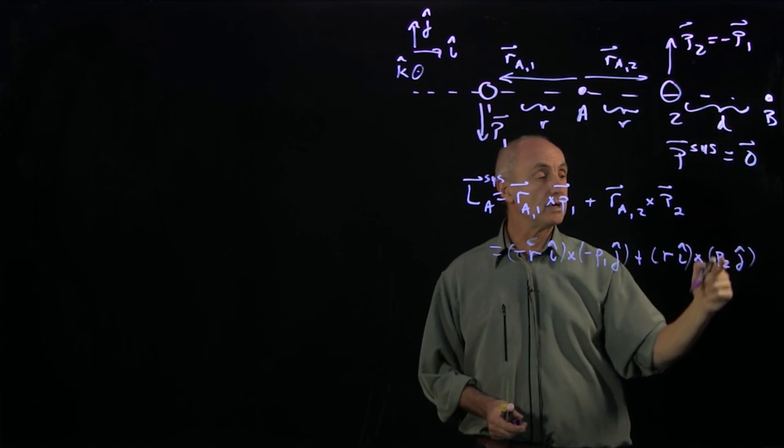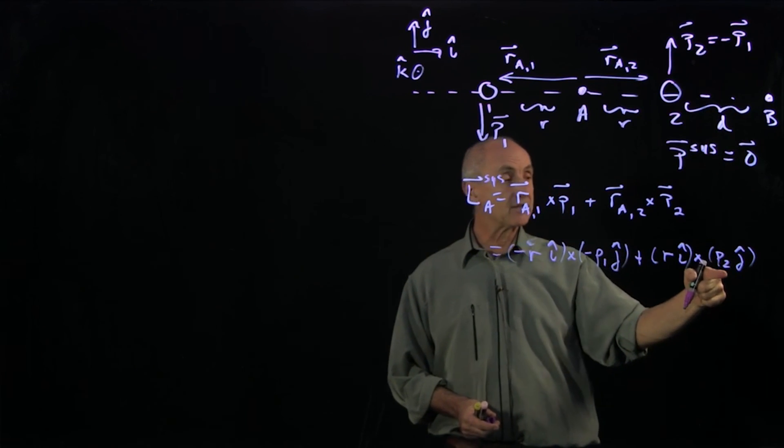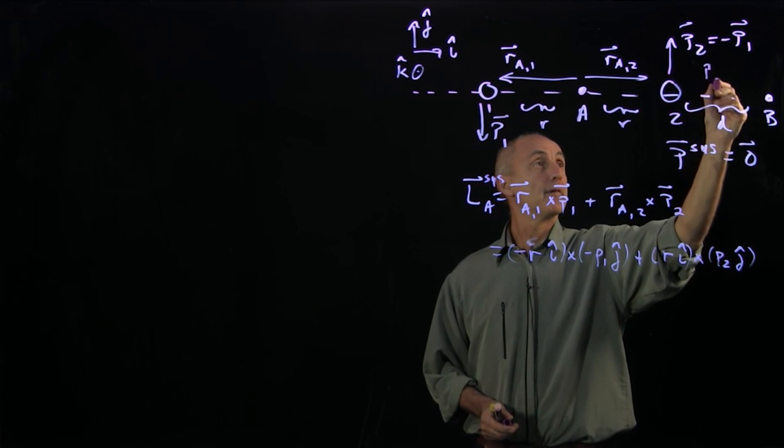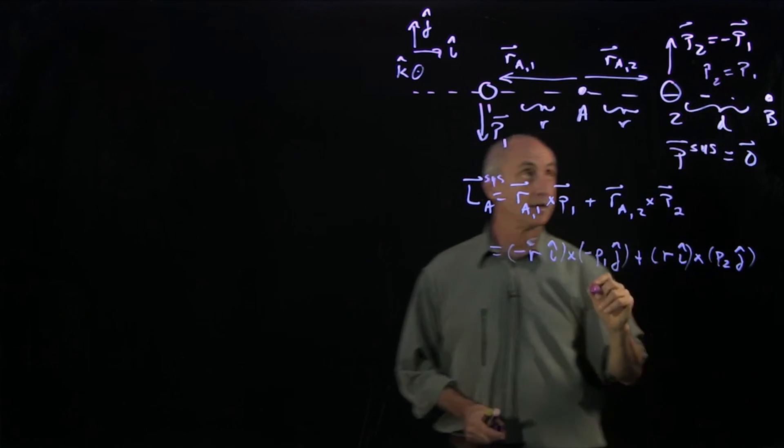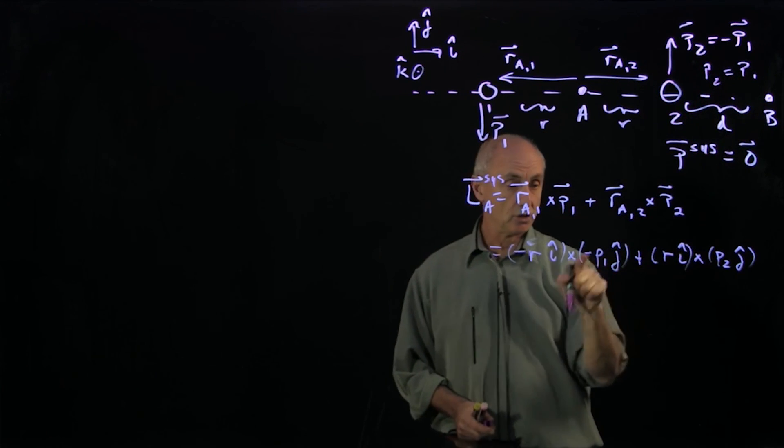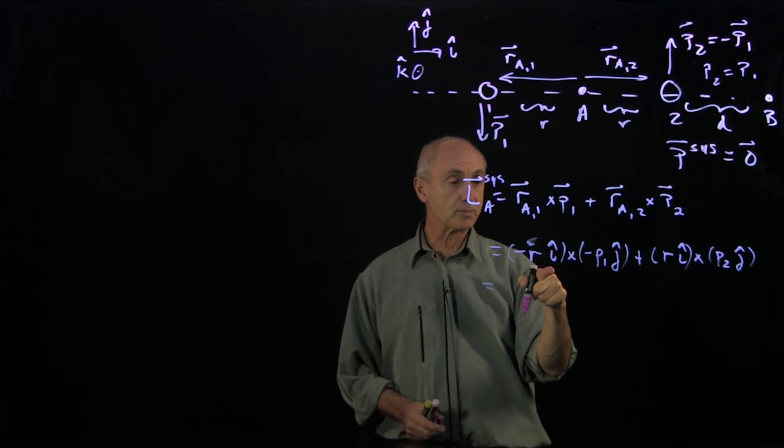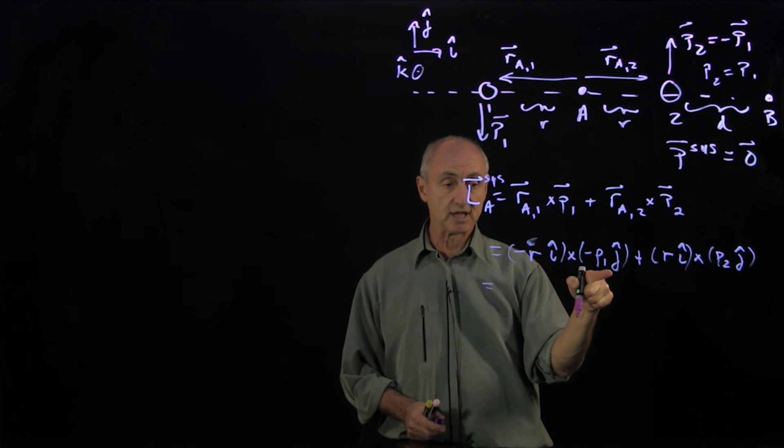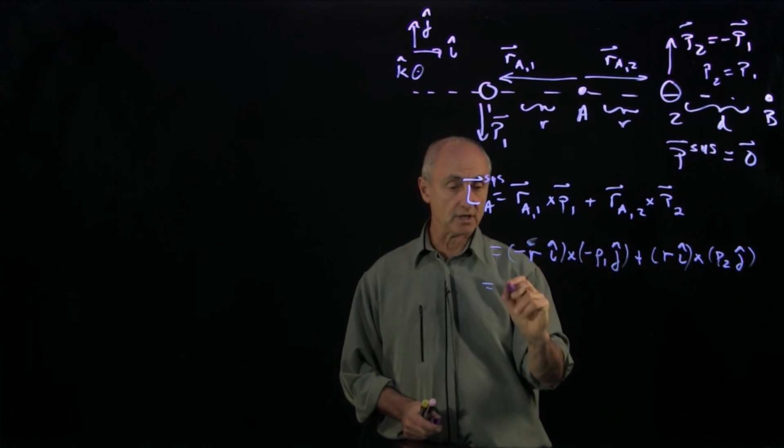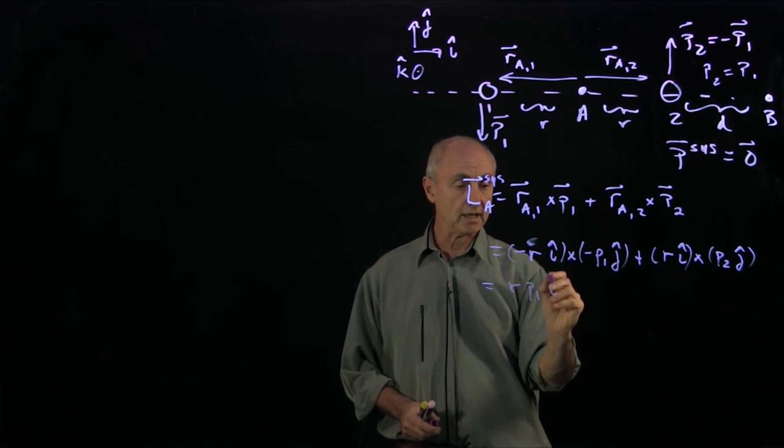Now remember, P2 has the same magnitude as P1, but they're pointing in opposite directions. So when I take the cross product, i hat cross j hat is k hat, minus sign, minus sign, so I get R P1 k hat.